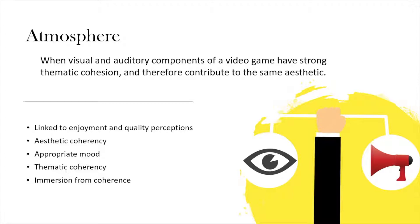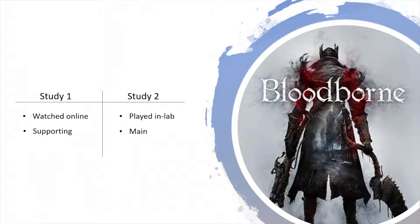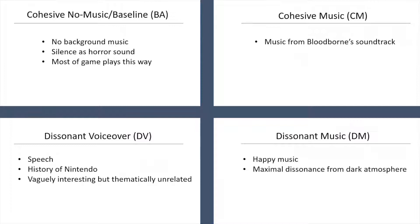We conducted two experiments to explore the concept of atmosphere in games. In both experiments, participants watched or played Bloodborne, a Victorian era-inspired survival horror role-playing game by FromSoftware. The game allows for control of various sound settings, allowing us to keep sound effects but mute the music, which allows us to overlay different background music to analyze the effect of audio-visual thematic cohesion on player experience. Its setting and difficulty are ideal for experiencing fear, emotional challenge, and gameplay challenges which trigger fear of losing points. In both studies, participants were randomly assigned to one of four conditions, in each of which a different audio with a different level of audio-visual thematic cohesion played in the background while participants watched or played Bloodborne's first level.